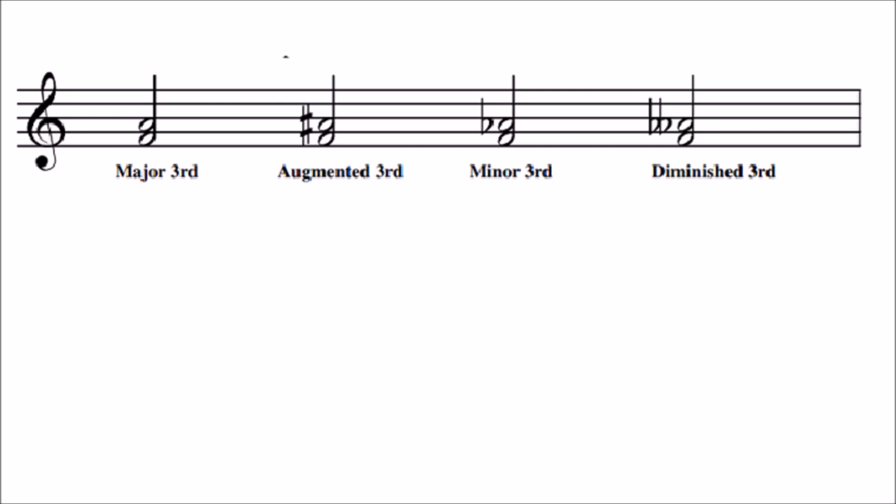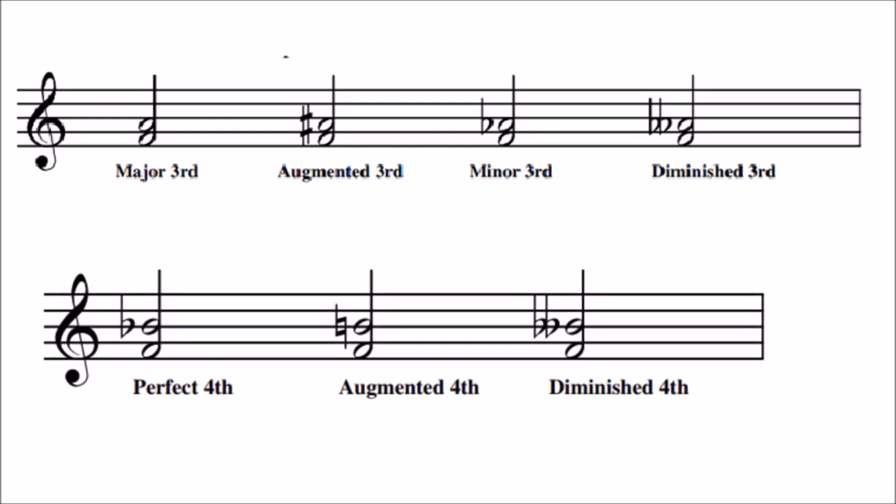F to A is a major third because A is the third note of F major. F to A sharp is an augmented third because it has been increased by a semitone. F to A flat is a minor third that has been decreased by a semitone. And F to A double flat is a diminished third — that is a minor third decreased by yet another semitone.